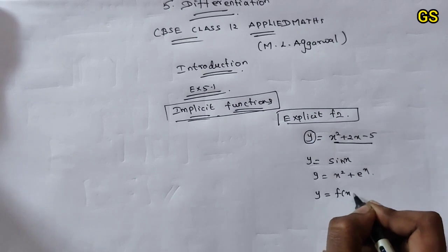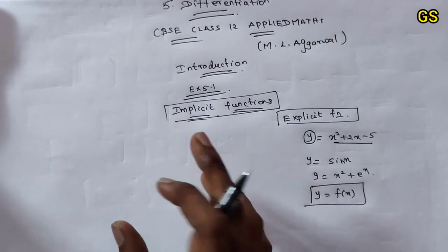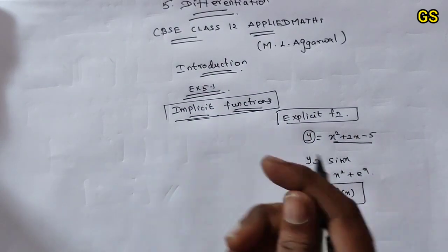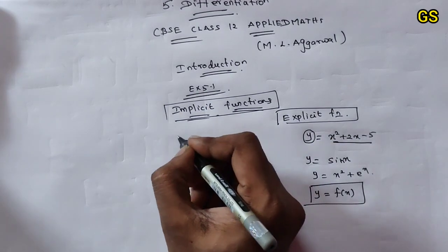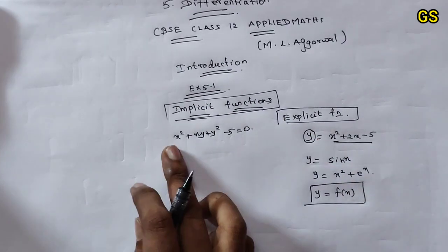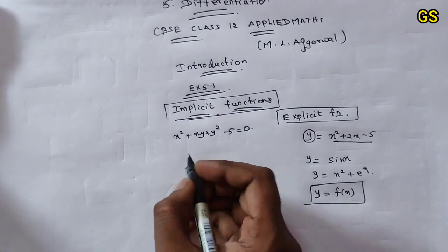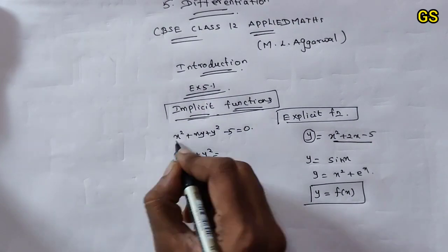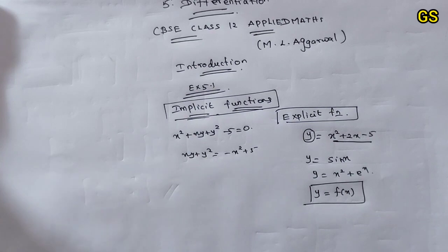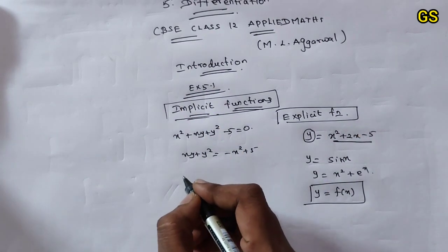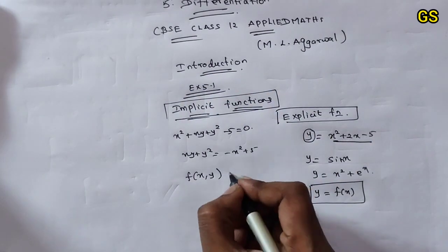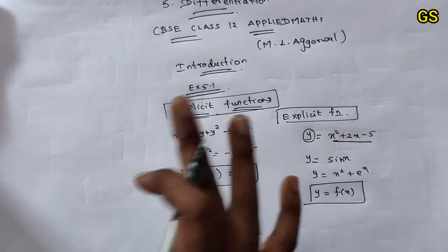So y is equal to f of x in general. For implicit functions, x and y are mixed together - y is inside along with x. In some cases you can separate them, but in most cases you cannot separate them. For example, x squared plus xy plus y squared minus 5 is equal to 0. Here y cannot be separated easily - this is an implicit function, written as f of x, y equals 0, where x and y are together.